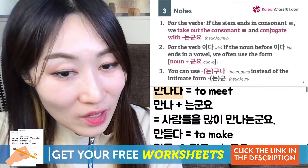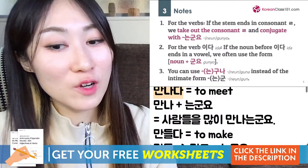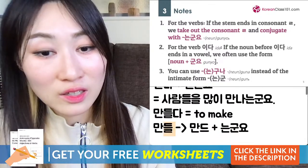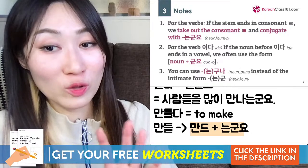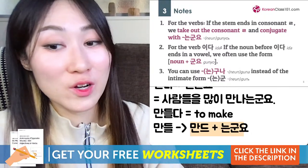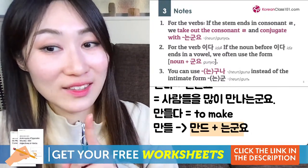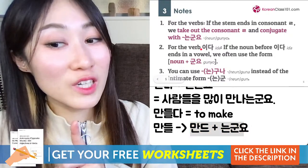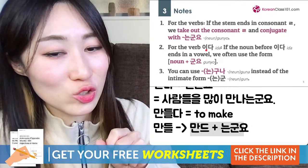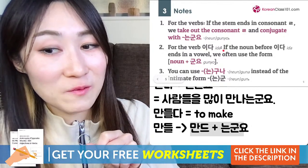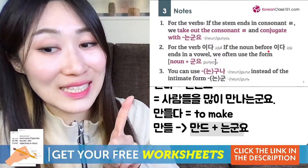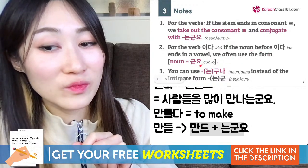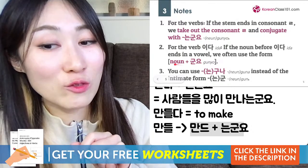The 리을 exception is for verbs only. Now, for 이다 — 'to be' — if the noun before 이다 ends in a vowel, we often use the form noun plus 군요 without the 이. Let me show you: for example, mango — 망고 in Korean. To be a mango is 망고이다. If you want to conjugate it with 군요, remove 다 and say 망고이군요 — that's fine.